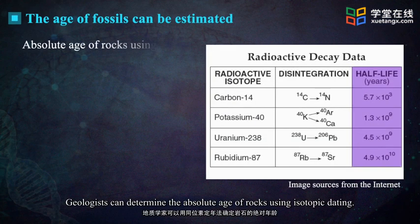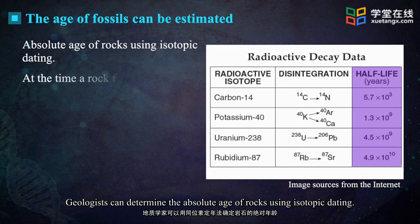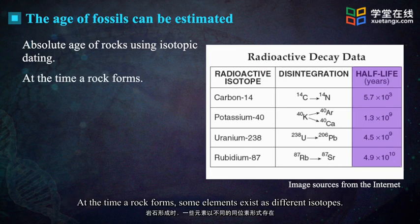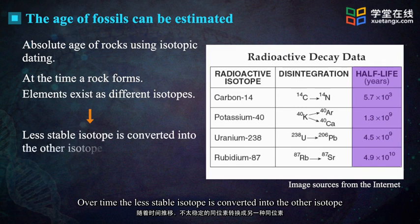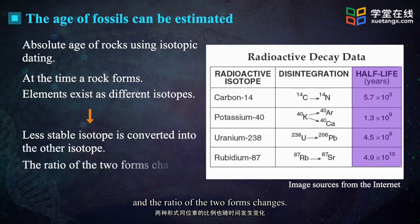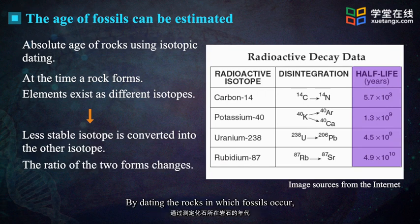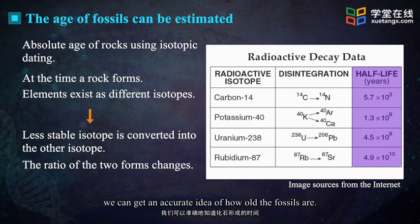Geologists can determine the absolute age of rocks using isotopic dating. At the time a rock forms, some elements exist as different isotopes. Over time, the less stable isotope is converted into the other isotope, and the ratio of the two forms changes. By dating the rocks in which fossils occur, we can get an accurate idea of how old the fossils are.